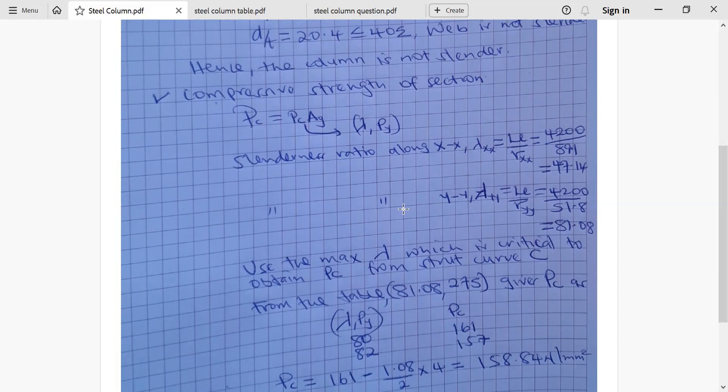Now, for us to obtain the value of PC, we look at the intersection of lambda, slenderness ratio, and design strength PY in the strut curve table 24C. Now, let's proceed. I want us to obtain the value of PC at the intersection of slenderness ratio 81.08 and PY 275. This is how we proceed.